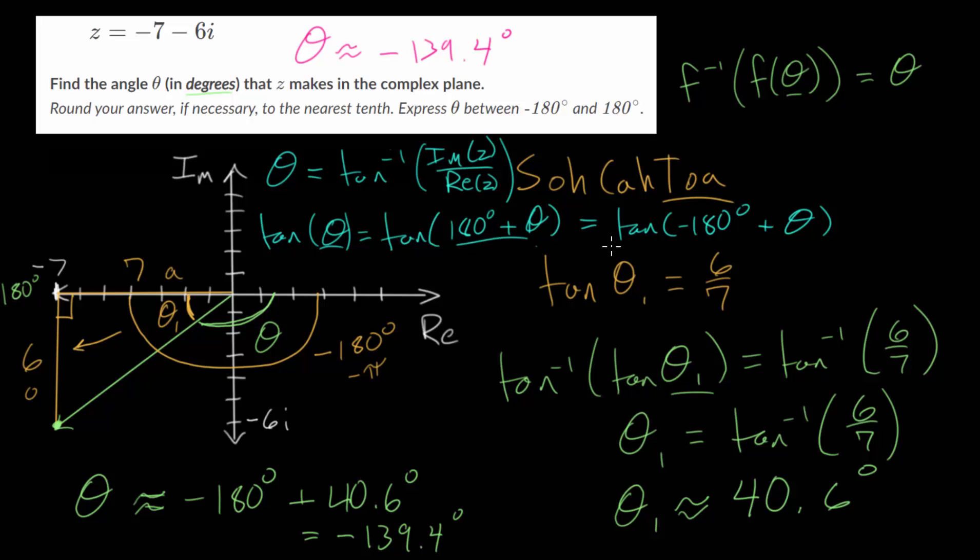or it's equal to the tangent of minus 180 degrees plus theta. And essentially, we can always compare the inside of these functions, which in some sense is what we did here. Since we found the answer to this formula, that was 40.6, and then we used this identity here that the tangent of theta is equal to the tangent of minus 180 degrees plus theta.